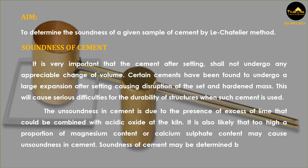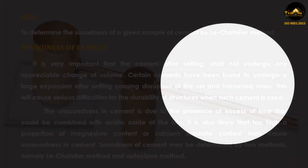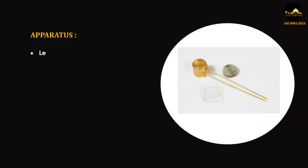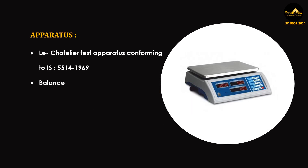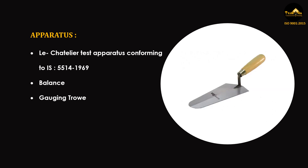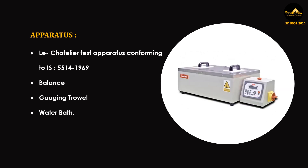Soundness of cement may be determined by two methods, namely the Le Chatelier method and the autoclave method. Apparatus required: Le Chatelier Test Apparatus conforming to IS 5514-1969, Balance, Gauging Trowel, and Water Bath.